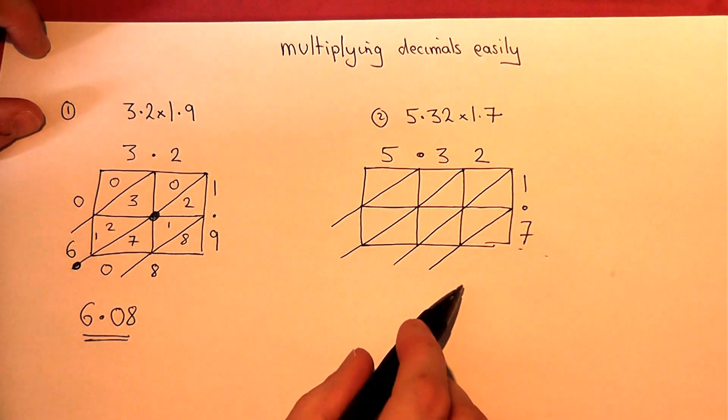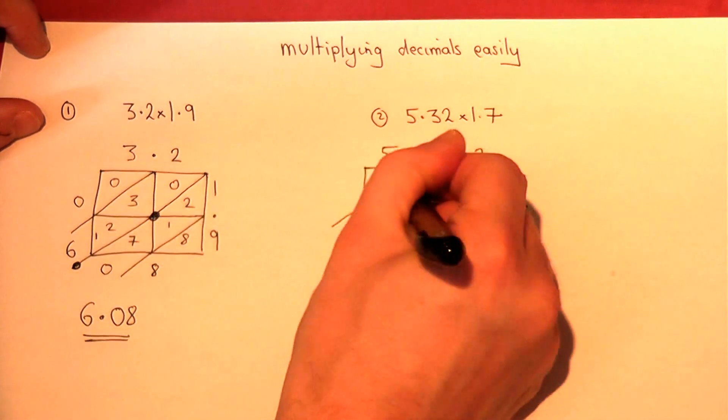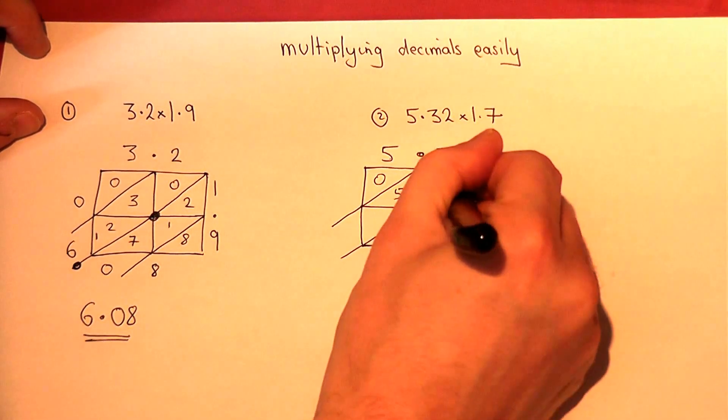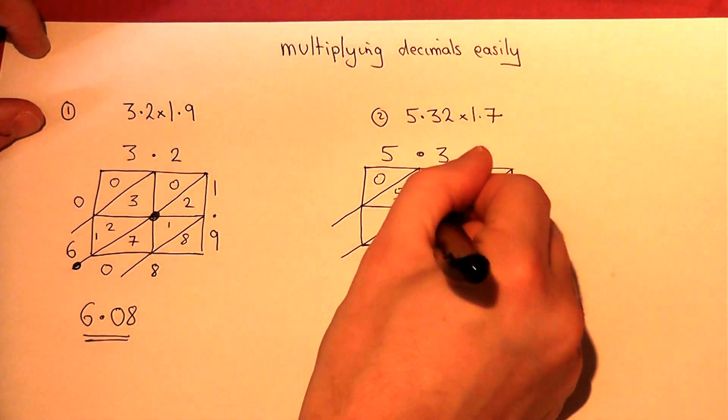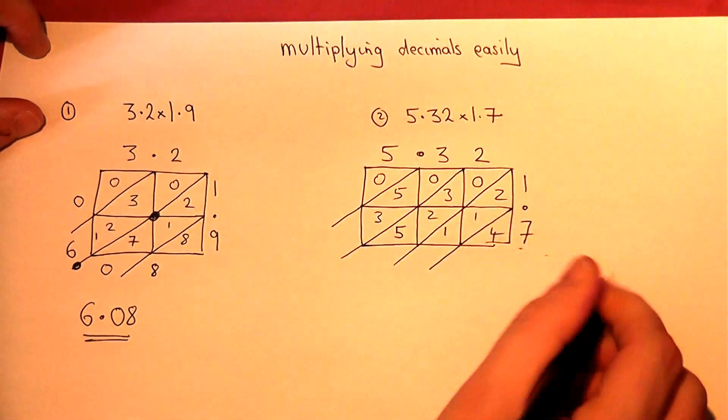And then work out each of the elements. 5 times 1 is 5. 3 times 1 is 3. 2 times 1 is 2. 2 times 7 is 14. 3 times 7 is 21. 5 times 7 is 35.